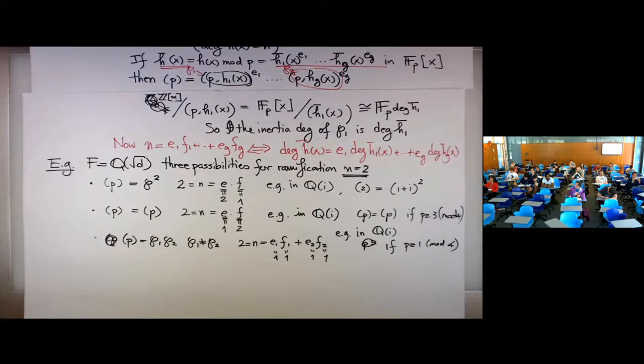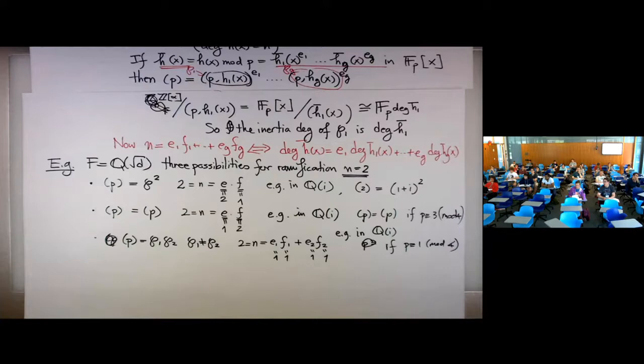For a more complicated field, you have more possibilities for how to write N as a sum. There are many things that can happen in general. Now let's move on to the next topic: the ideal class group. This is a recap of what we learned last time, and we also want to introduce the meanings of ramification degree and inertia degree, which are important concepts in depth number theory.